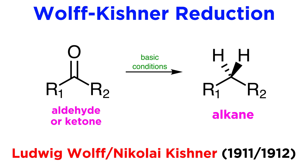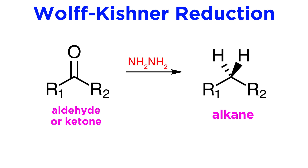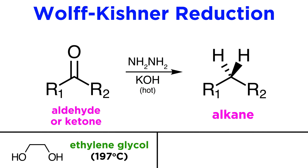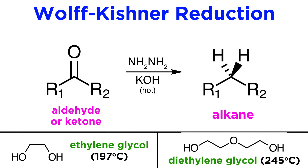This method, which actually was developed first, was articulated independently in 1911 and 1912 by German chemist Ludwig Wolf and Russian chemist Nikolai Kirchner. The transformation was carried out with hydrazine and a strong base like potassium hydroxide at very elevated temperatures, in a high boiling solvent such as ethylene glycol, which refluxes at 197 degrees Celsius, or even diethylene glycol, which boils at 245 degrees Celsius.